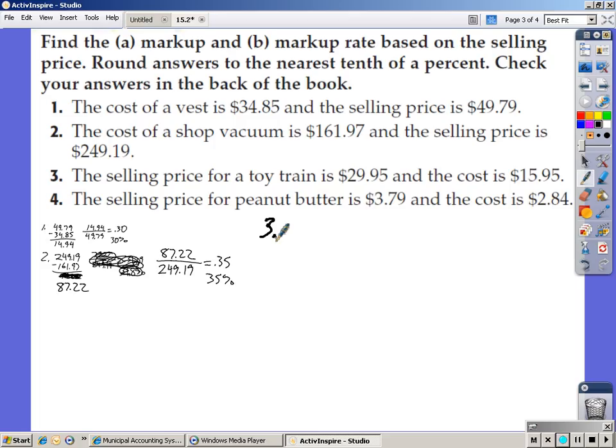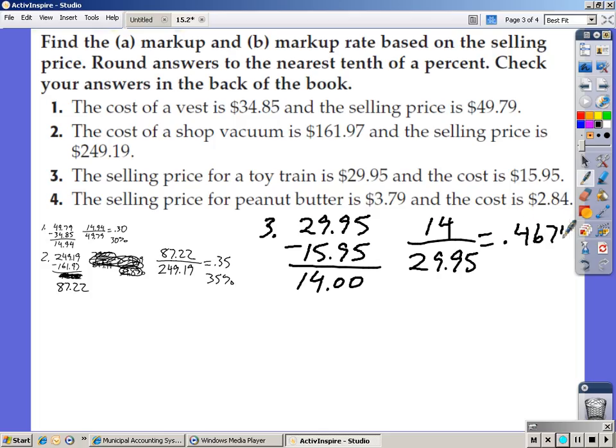It says the selling price for a toy train is $29.95. The cost is $15.95. So $29.95 minus $15.95 is $14. Take $14 divided by the selling price of $29.95. You should get .4674, which works out to be 46.7%.